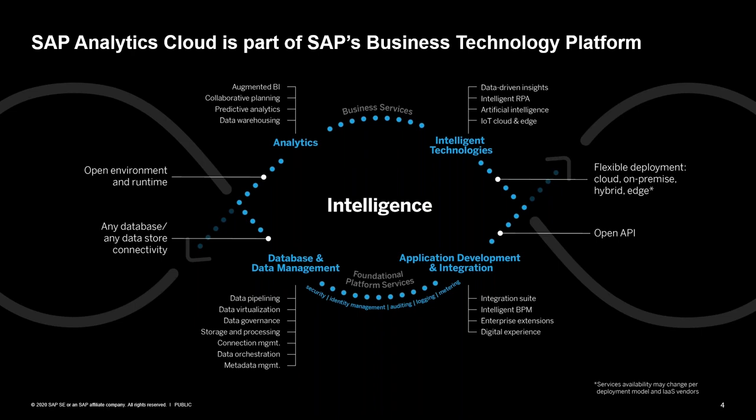I recently worked with a customer in the US federal government where a report took four hours to run — by moving to this platform, it now takes two seconds. The Business Technology Platform has four components: database, analytics, intelligent technologies, and application development. From a database and data management perspective, we want to make better decisions faster with in-memory technologies that optimize storage, compliance, and analytics. From an analytics perspective, what we call smart features help you discover deeper insights, simplify access to critical information, and empower everyone in your organization. From intelligent technologies, we want to embed machine learning, RPA, and artificial intelligence at scale.